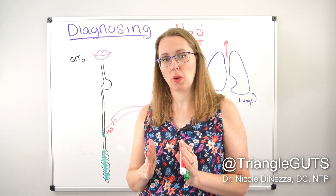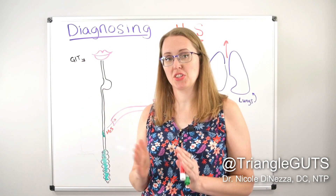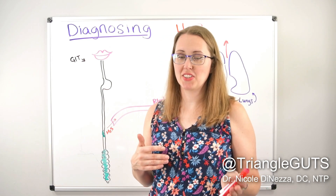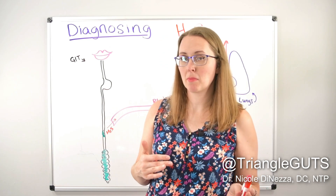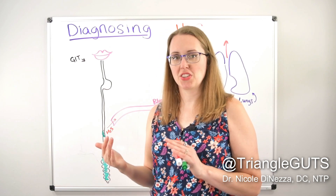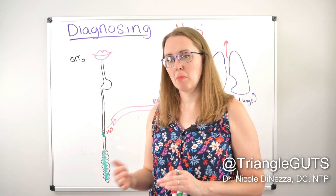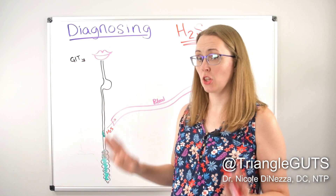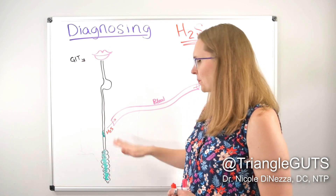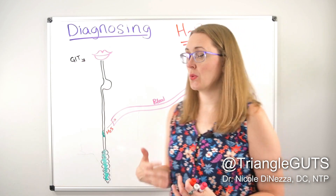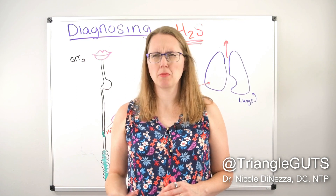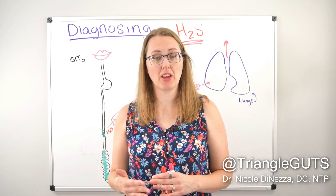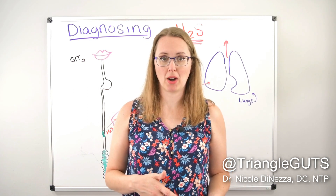The middle is where we have a lot of disagreement, even between European and American guidelines. European guidelines tend to settle more with the 60-minute mark, while American guidelines still settle with the 90-minute mark. That's a whole other conversation for breath testing at large. Now in the American market, as of maybe about two years ago, we do have a breath test that looks for hydrogen sulfide specifically, called Trio Smart.